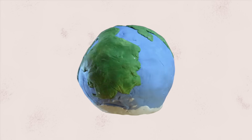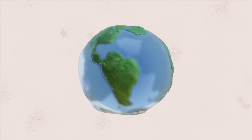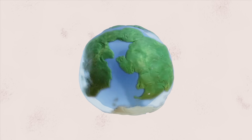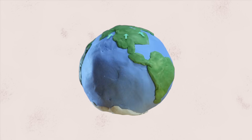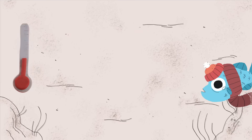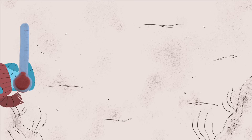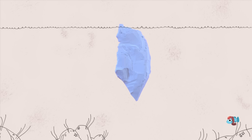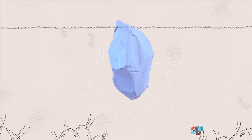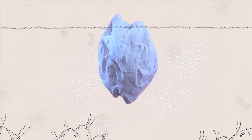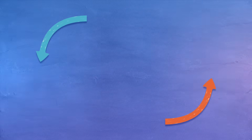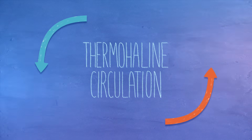Unlike surface currents, deep ocean currents are driven primarily by changes in the density of seawater. As water moves towards the North Pole, it gets colder. It also has a higher concentration of salt, because the ice crystals that form trap water while leaving salt behind. This cold, salty water is more dense, so it sinks, and warmer surface water takes its place, setting up a vertical current called thermohaline circulation.